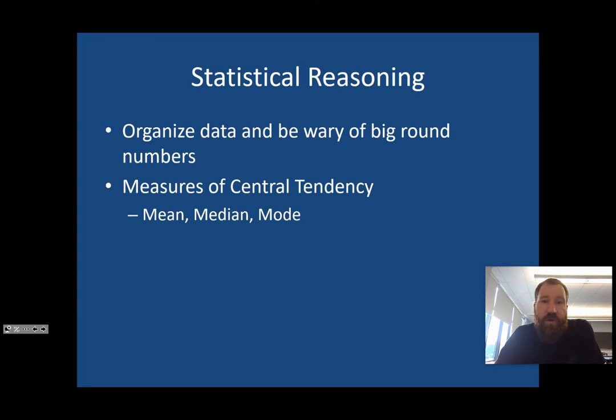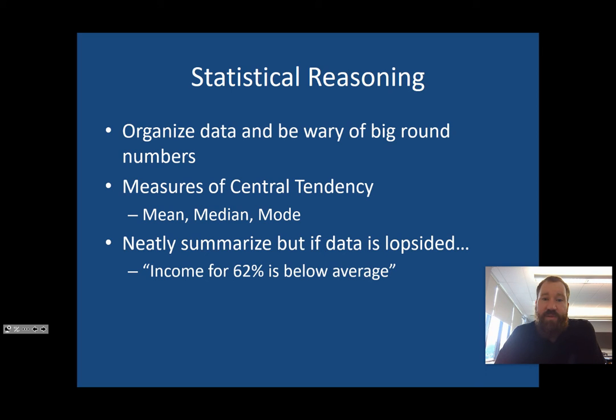Now, these things are great. Measures of central tendency are wonderful. But it kind of doesn't do the best job in terms of organizing it if we have lopsided data. So sometimes you'll hear things like in the news, like 62% of income is below average. What does that mean? How can the income of 62% of people be below the average? That must mean that there is an outlier, that there is a large outlier that is skewing the data one direction or the other.